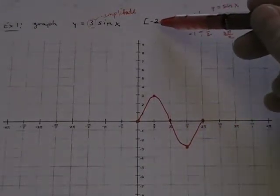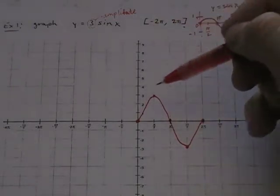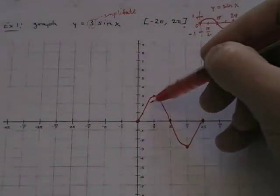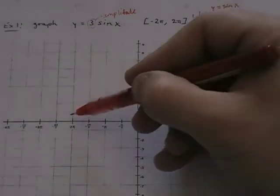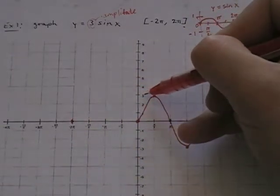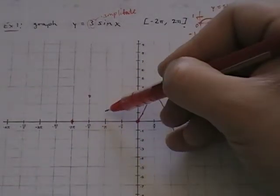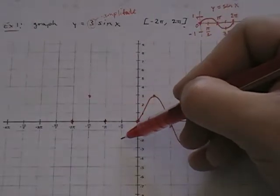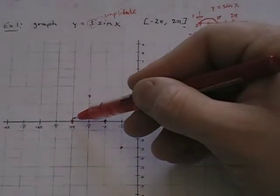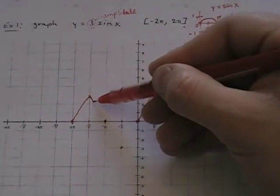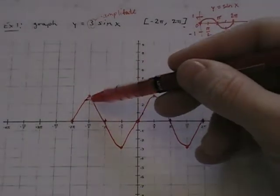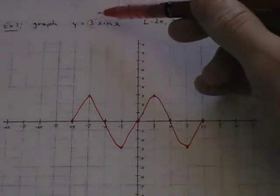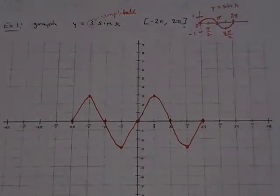They told us to graph from negative 2 pi to 2 pi, so we have to create a mirror image and another copy. It's going to start at negative 2 pi, go up to a height of 3, go back to 0, go down to negative 3, and come back to 0. So we get this nice cyclical sine wave — it goes up and down and up and down. The amplitude term always affects the height of the graph.